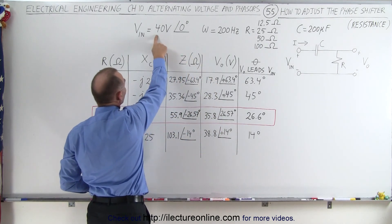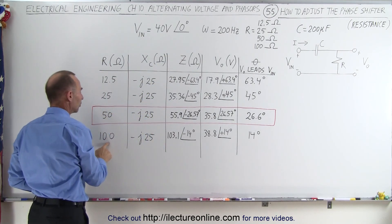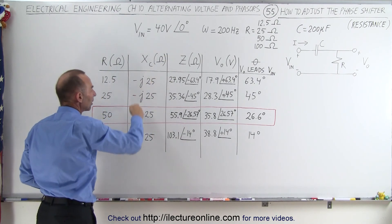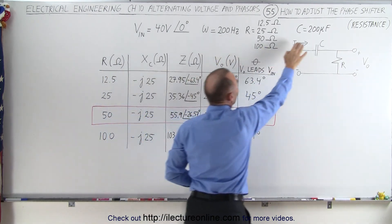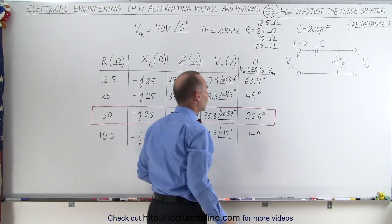Notice that the input voltage is 40 volts, so by the time the resistor is 100 ohms, we keep the capacitor reactance as 25 ohms because the frequency is 200 hertz and the capacitance is 200 microfarads.